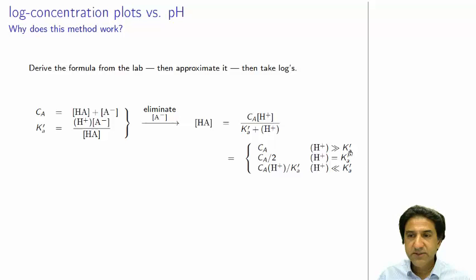Likewise, if the H plus concentration is really, really big compared to KA, let's suppose KA is 0.1 and H plus activity is like a million. Then we get C times a million divided by 0.1 plus a million. So this 0.1 is completely negligible compared to the large H plus.